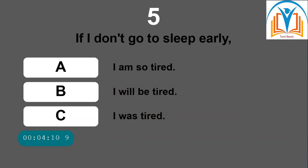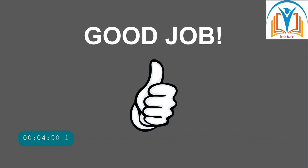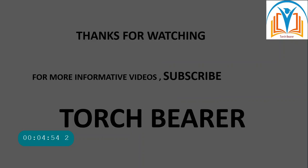Question five: 'If I don't go to sleep early...' Option A: I am so tired. Option B: I will be tired. Option C: I was tired. Pause the video and guess the answer. I know you have learned the rules and can pick it easily. The answer is B — 'I will be tired.' Good job, very well done! Thanks for watching. For more informative videos, subscribe to my channel Torch Bearer.